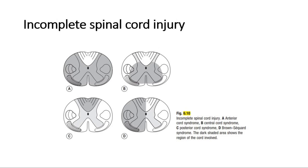Whereas for incomplete spinal cord injury, there are four main types: anterior cord syndrome shown in picture A, central cord syndrome shown in picture B, posterior cord syndrome shown in picture C, and Brown-Séquard syndrome shown in picture D. The dark shaded areas show the region of the cord involved.